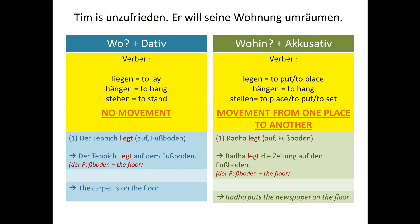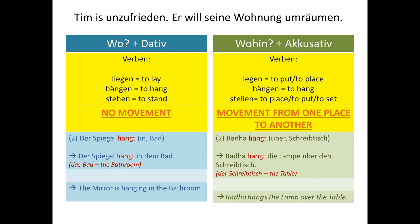The action verbs are 'legen' (to place/lay), 'hängen' (to hang something), and 'stellen' (to place/set something). For example: 'Radha legt die Zeitung auf den Fußboden' — Radha puts the newspaper on the floor, accusative. Then: 'Der Spiegel hängt in dem Bad' — the mirror is hanging in the bathroom, no movement, so dative.